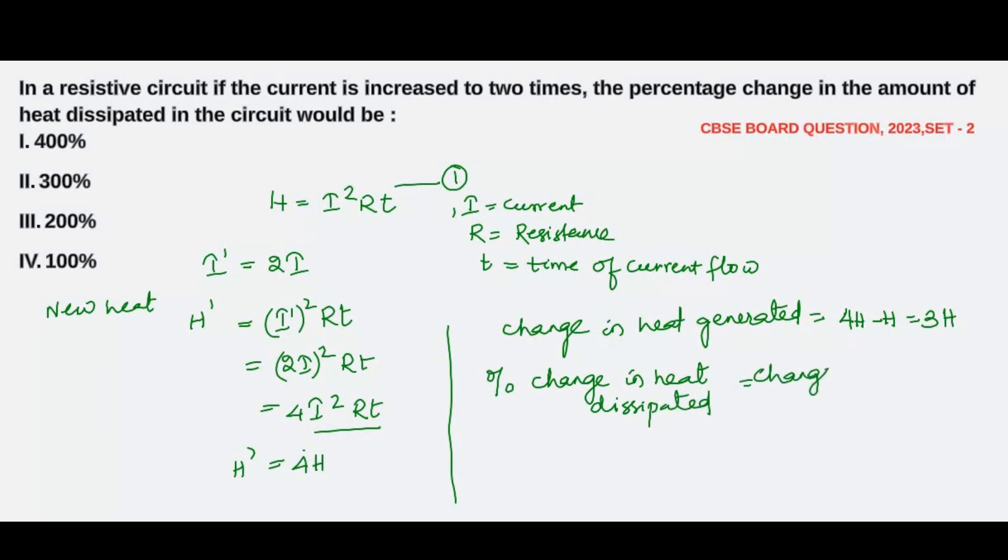Change in value—that is, change in value of heat generated or heat dissipated—by original value, the original amount of heat that was generated, times 100%. So change in value is 3H by original value, which was H, times 100%.